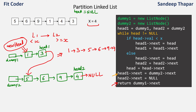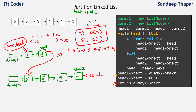We also delete dummy1 and dummy2 to avoid memory leaks. That is the overall logic of the algorithm: we keep two linked lists, one with values less than x and one with values greater than or equal to x. Once we have traversed the entire linked list, we join both. The time complexity is O(n) because we traverse the linked list only once, and the space complexity is O(1).